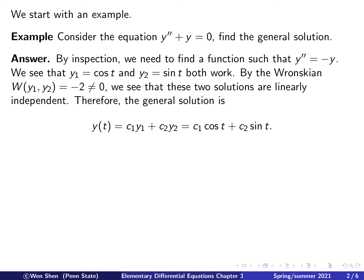We need to verify they are linearly independent. That can be simply done by computing the Wronskian. The Wronskian of sine and cosine was an exercise we had earlier. It equals negative one, so it's never zero, so they are linearly independent. Therefore we have found two solutions y1 and y2 that are linearly independent, and the general solution is c1 cosine t plus c2 sine t.